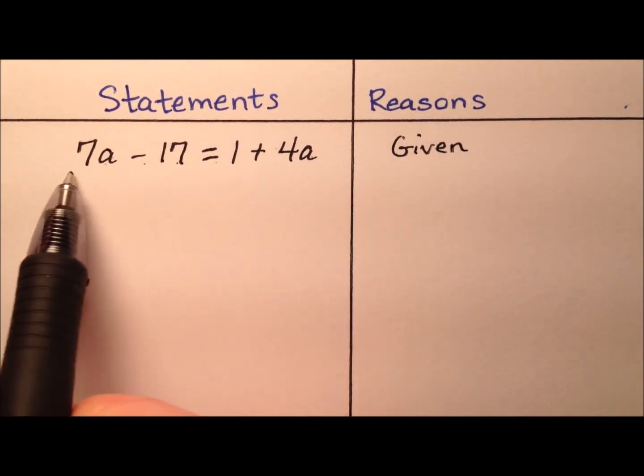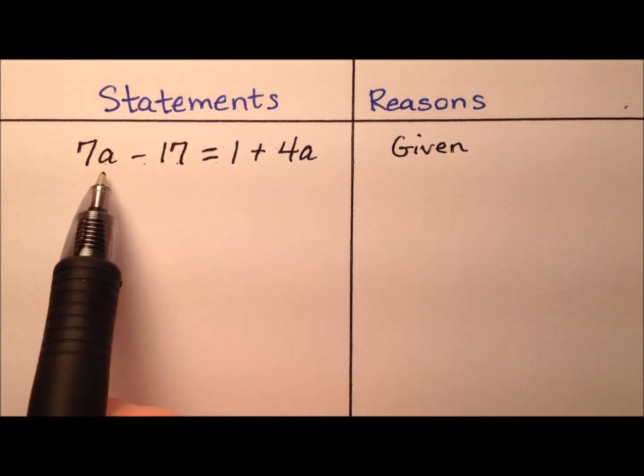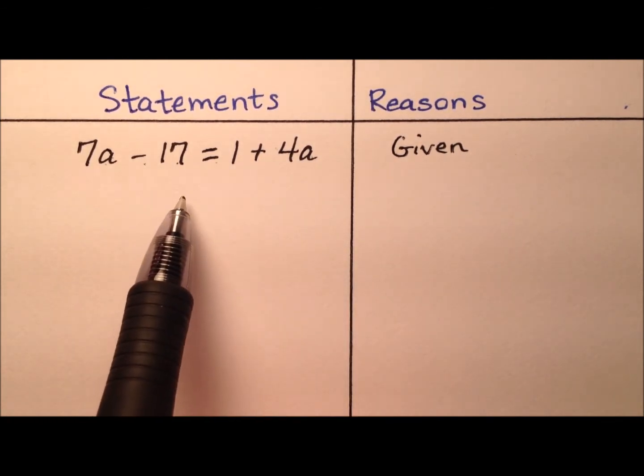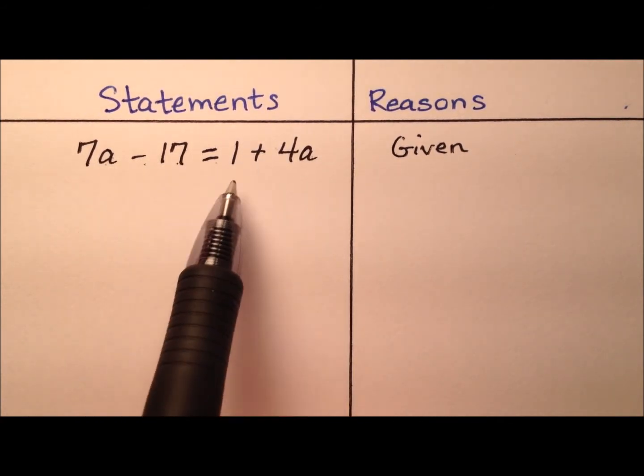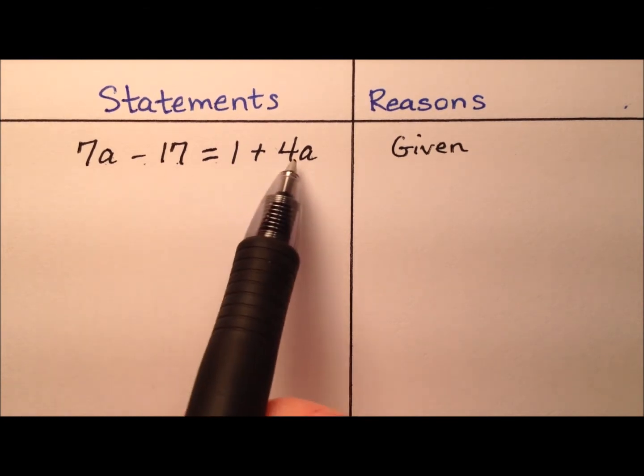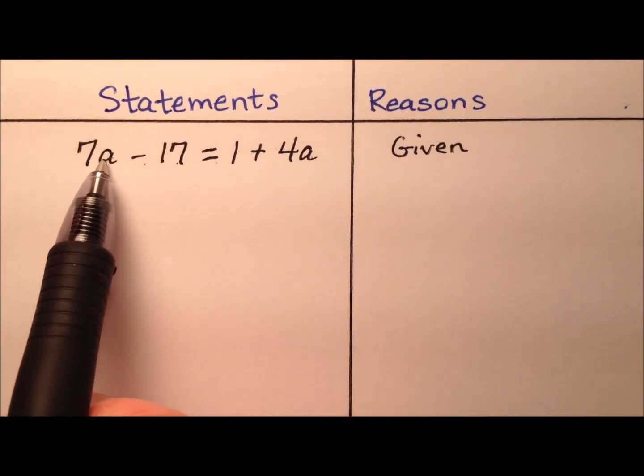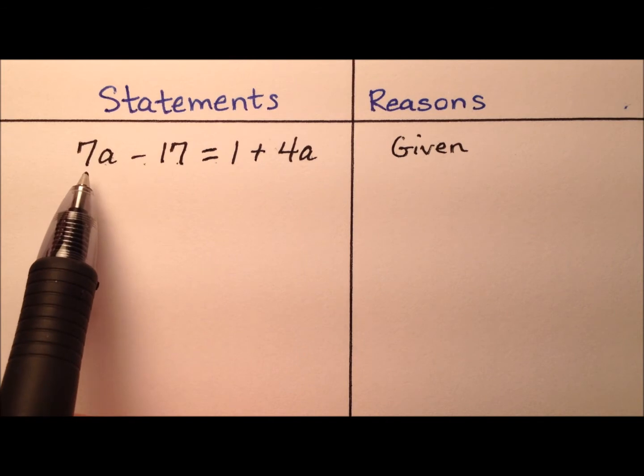Looking at this equation, we need to decide which side should we put the variables on and which side should we put the numbers on. Typically students like to put these variables on the left side and the numbers on the right, especially if the coefficient of the variable is going to be positive over here on the left side.